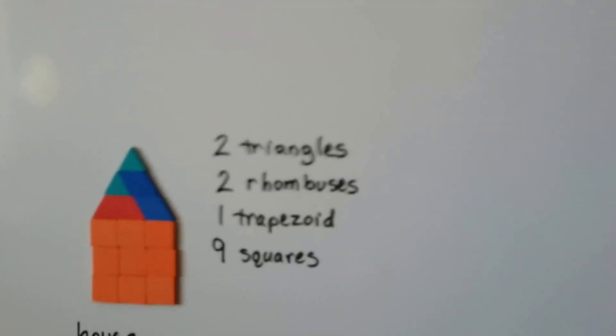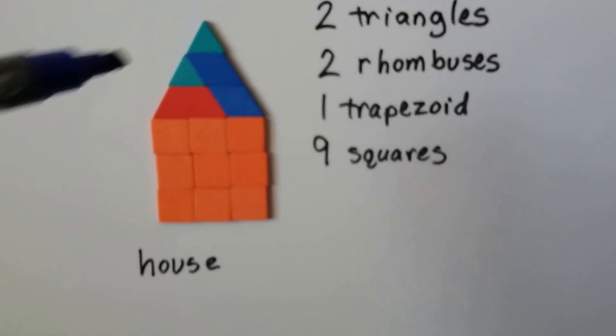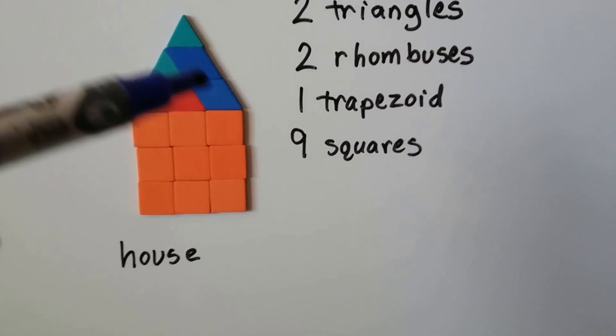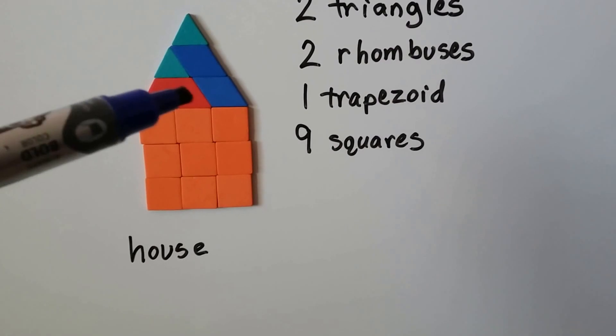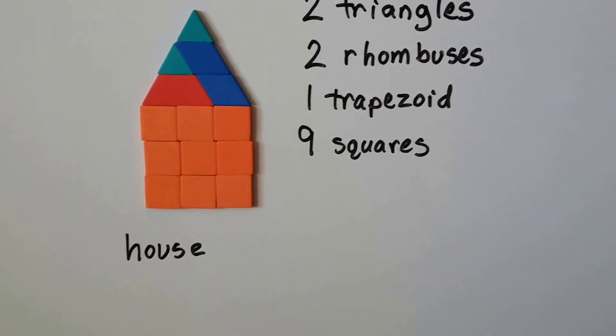We can have some fun. I took two triangles, two rhombuses, one trapezoid, and nine squares, and I made a house.